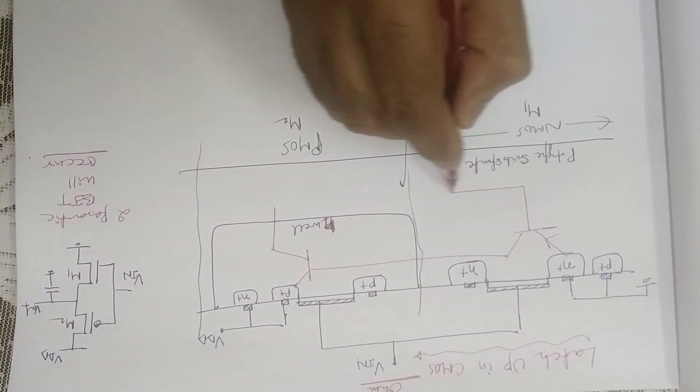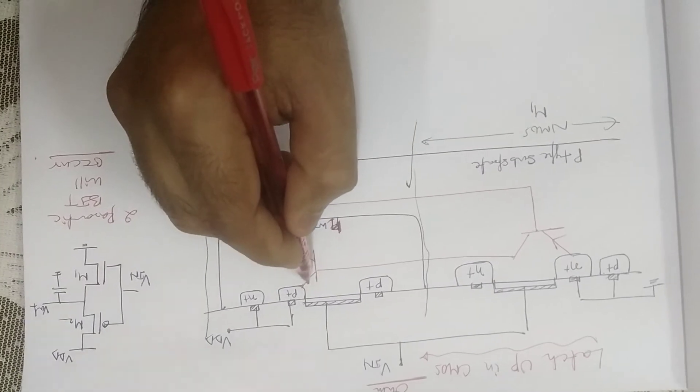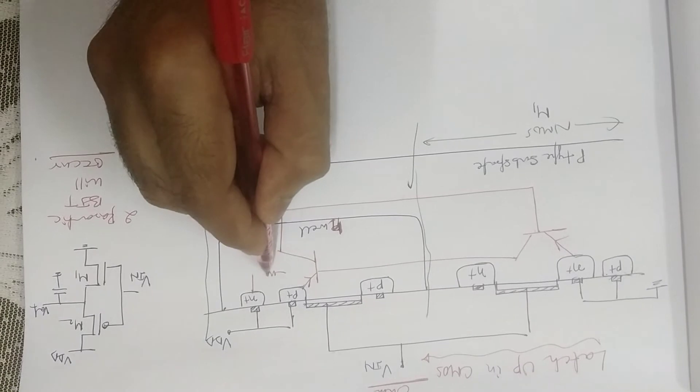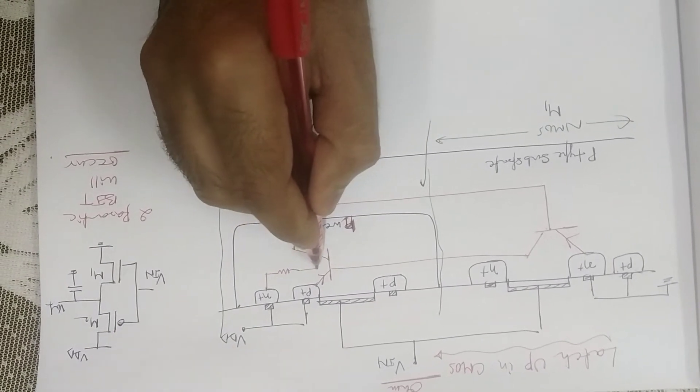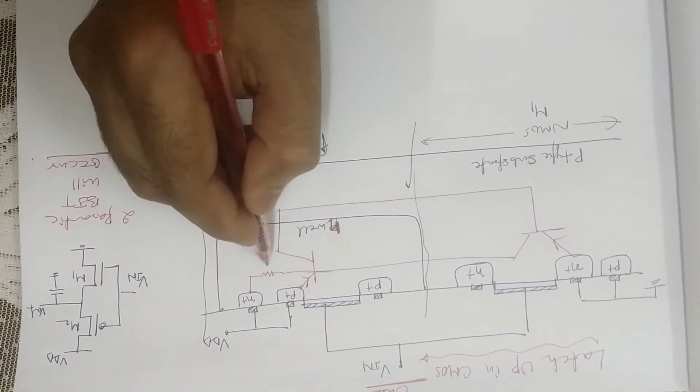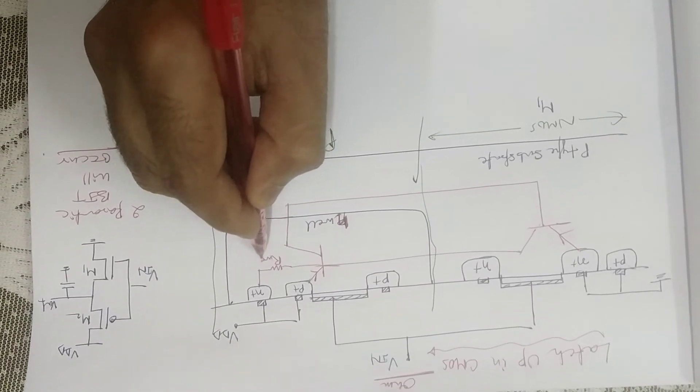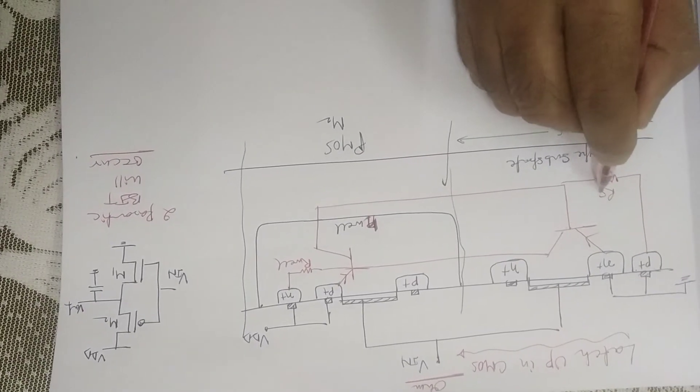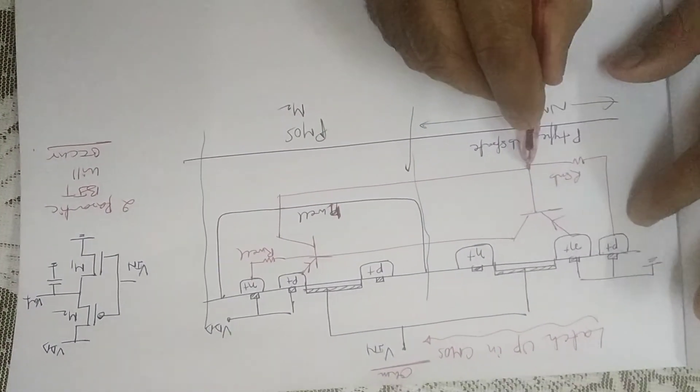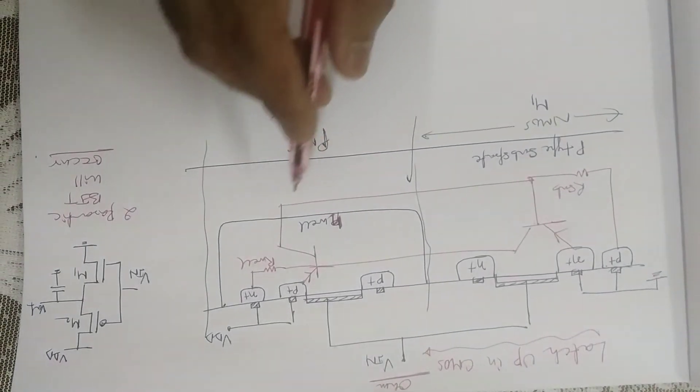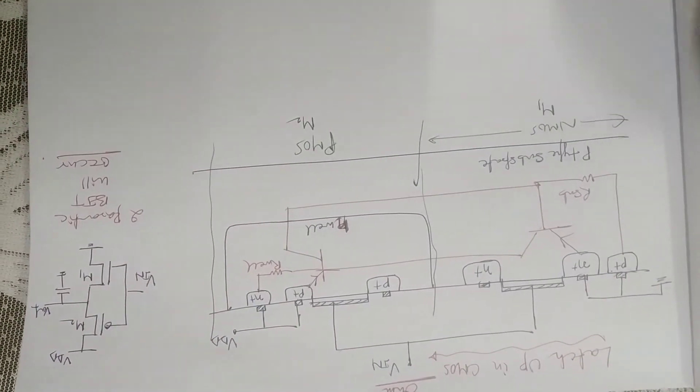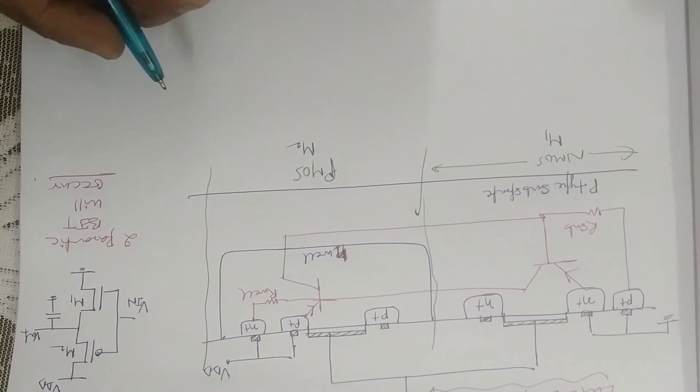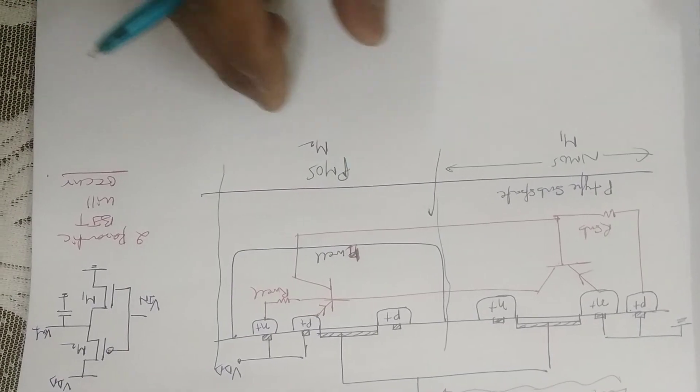This one, and there is some resistance, say R-well, and one more resistance is this one, say R-substrate.